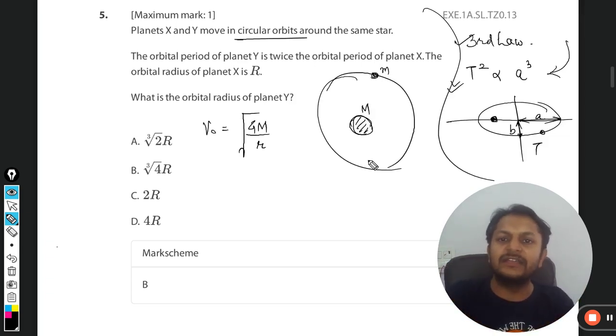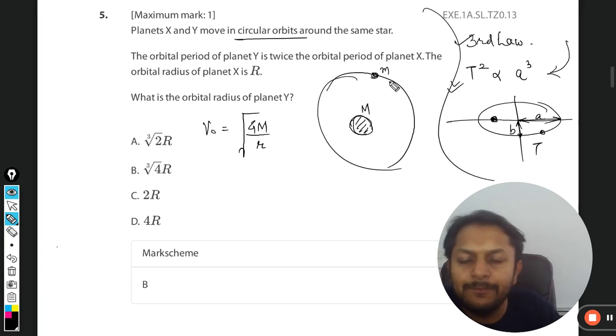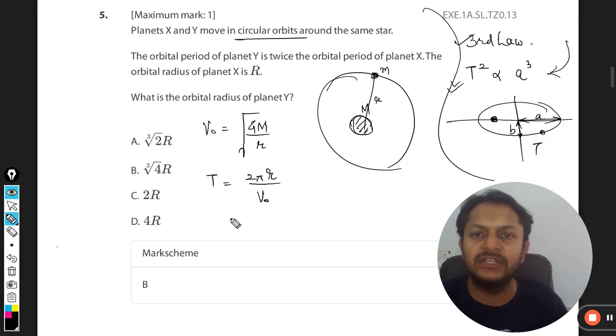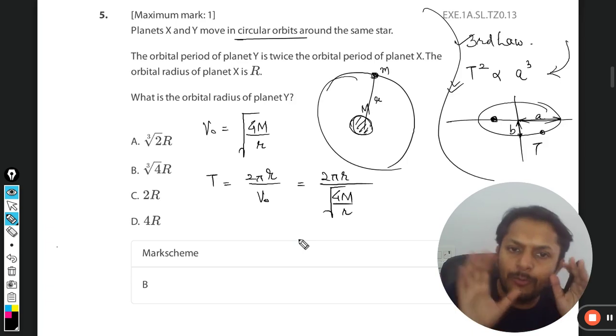The planet mass is small m, the distance between these two is r. So this is the orbital velocity. I can find time period by saying the circumference of this has to be covered with the orbital velocity. So it is 2πr divided by v₀, so it will give you 2πr divided by √(GM/r).